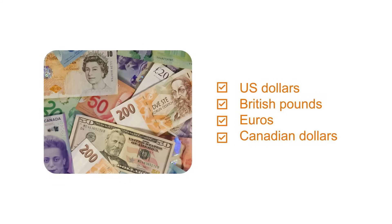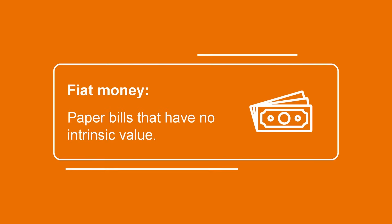Let's start by looking at some money. Here we have pictures of many different currencies, from US dollars and British pounds to euros and Canadian dollars. These paper bills are what economists call fiat money, or currency. It's fiat money because these pieces of paper have no intrinsic value — we accept it as payment for goods and services because the government said that they are legal tender and we must.